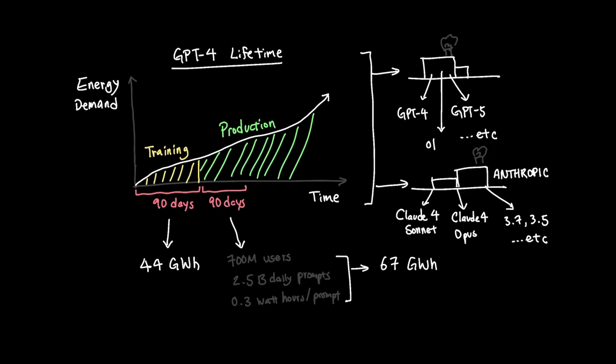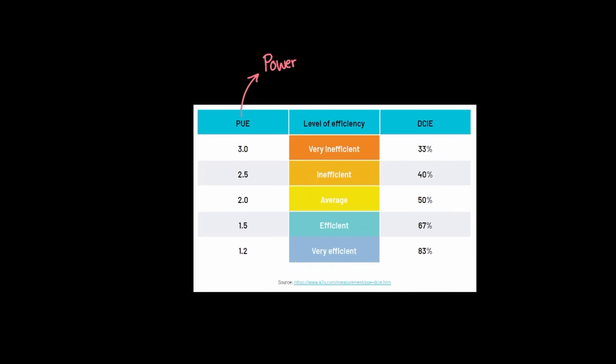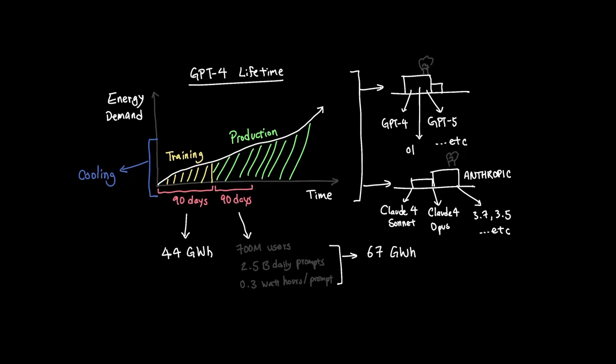Another energy overhead that goes into both training and deploying these models is cooling. And this is measured in a metric called Power Usage Effectiveness, or PUE. Essentially, for every wattage that we use in a data center, what multiple do you need to consider when you're using cooling? So for OpenAI, the GPT-4 model could have had a PUE of, let's say, 1.2, which brings our energy consumption in training from 44 gigawatt hour to 52.8 gigawatt hour. And the energy consumption for the deployment of the model goes from 67 gigawatt hours in 90 days of serving 700 million users to 80 gigawatt hours.